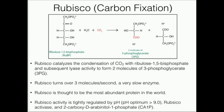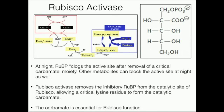There is another regulator called 2-carboxy-D-arabinatol-1-phosphate, or CA1P. CA1P can also strongly regulate RUBISCO — it inhibits RUBISCO's function by entering the active site. Plants sometimes need to regulate RUBISCO in additional ways, so they produce CA1P to further inhibit it. Ultimately, RUBISCO is a very strongly regulated enzyme because it controls the entry into the light-independent reactions — even though we look at it last in the Calvin cycle, it's what really controls entry into glucose synthesis.